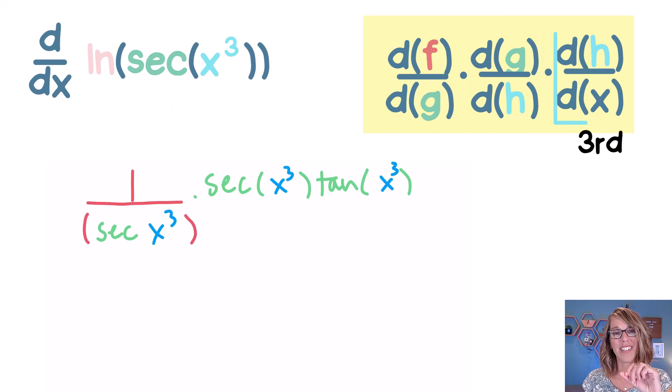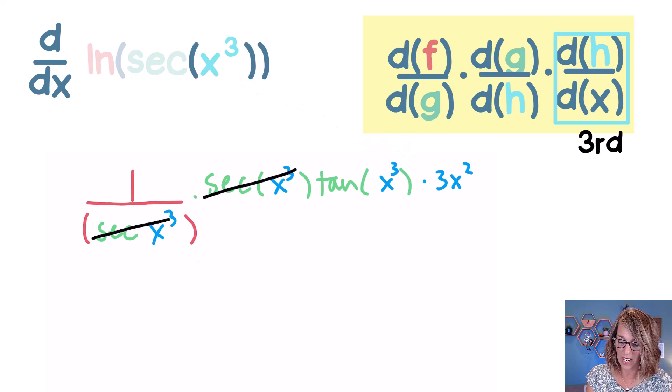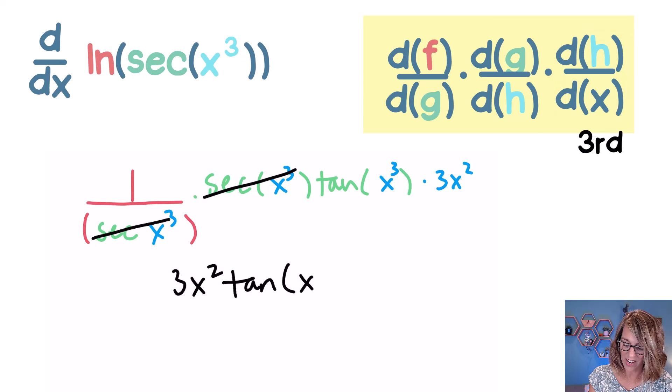And then finally, I'm ready to take the derivative of h. I'm done with the natural log, I'm done with secant. I take the derivative of x cubed and that is 3x squared. Now hang on because I want to cancel. There's actually some really nice things that I can do here to simplify. For my final answer, I've got the 3x squared times the tangent of x cubed.